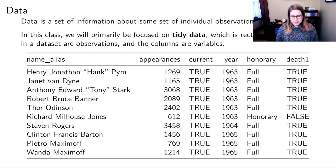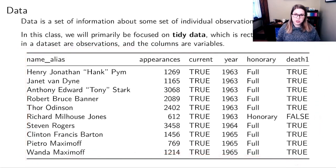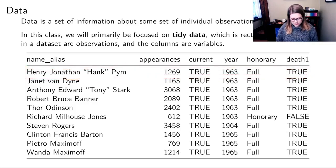To start with in this class, we're going to think about data. Data is a set of information about some set of observations. In this class, we're going to be thinking about tidy data. Tidy data is data that can be drawn in a kind of rectangular shape. If you think about a spreadsheet, that is often tidy data. In tidy data, the rows in the data set are observations and the columns are variables.